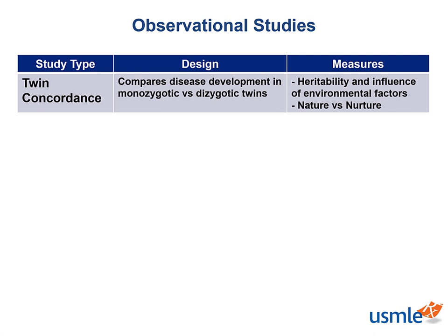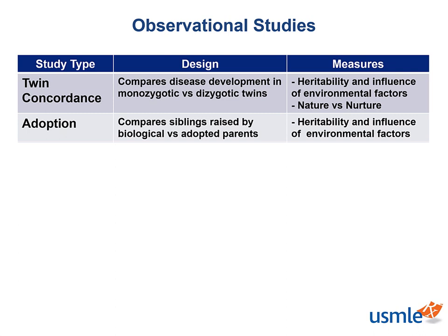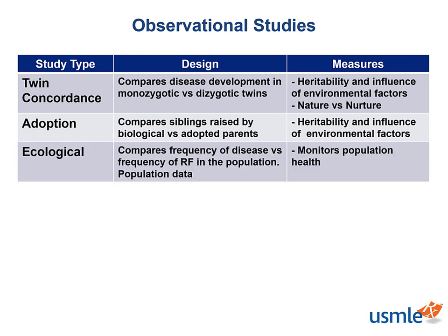Twin concordance studies compare the frequency with which both monozygotic twins and both dizygotic twins develop a disease, measuring the heritability of a disease. The more concordance a disease shows for monozygotic twins relative to dizygotic twins, the greater the heritability. Adoption studies compare siblings raised by biologic versus adoptive parents to separate heritability from environmental influences. Ecological studies compare the frequency of disease with the frequency of risk-related factors across populations, used to monitor population health. A drawback is the ecological fallacy — population data that is typically not applicable to the individual.